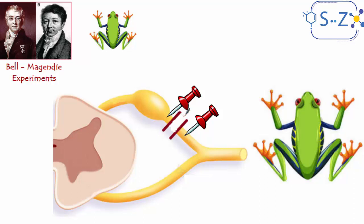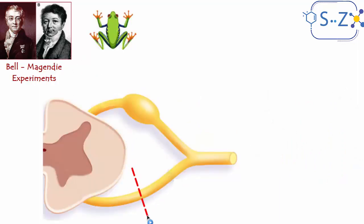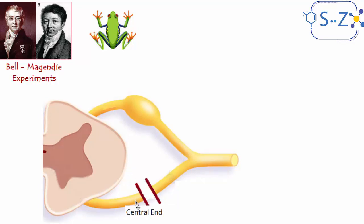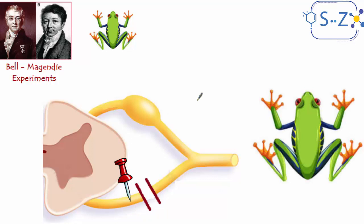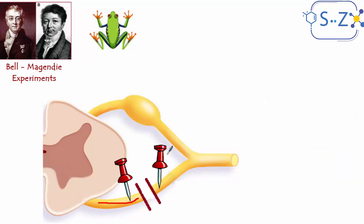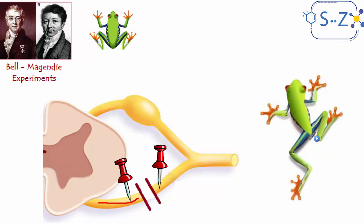Another experiment was done, but this time the cut was made on the ventral root. Again there are two ends: the central end, nearer to the nerve center, and the peripheral end. When a stimulus was applied to the central end, nothing happened — the nervous message was blocked by the cut and couldn't complete its route. But when they applied a stimulus to the peripheral end, the frog flexed its posterior paw, meaning the nervous message moved through the peripheral ventral root to the effector organ.